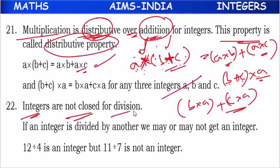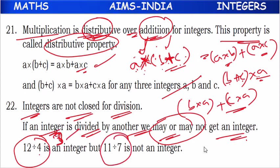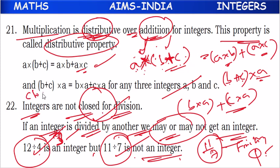Integers are not closed under division. If an integer is divided by another integer, we may or may not get an integer. For example, 12 divided by 4 gives 3, which is an integer. But 11 divided by 7 is not divisible — it gives a fraction or rational number, which is not an integer. So they do not follow the closure property under division.